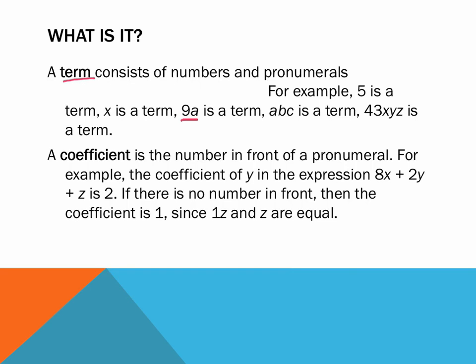A coefficient is the number in front of the pronumerals. For example, the coefficient of y in this little thing here that says 8x plus 2y plus z is 2. Because if you look at y, it has a 2 in front of it. That's y's coefficient. If there is no number in front of it, then the coefficient is 1. So if you see something like 2 plus z and you're asked to find the coefficient of z, the coefficient is 1. Because there's no number in front of that z, but I know that if there's no number, it means 1.